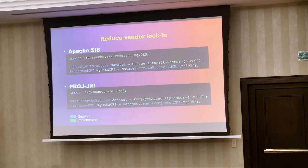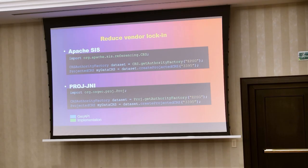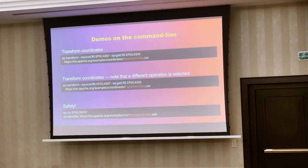There is an example showing how to get a coordinate reference system definition using two different implementations: Apache SIS or Proj via JNI (Proj is a very popular C/C++ library for map projections). The code shown in blue is the implementation-neutral interface from GeoAPI. The starting point differs slightly between implementations, but everything in blue after that is implementation-neutral. For developers this is a safety net — you are not tied too much to Apache SIS and have freedom to move to another implementation if Apache SIS doesn't fit your needs, or conversely if you want to switch from another project.